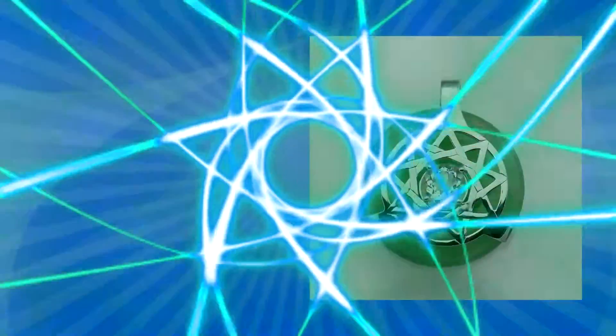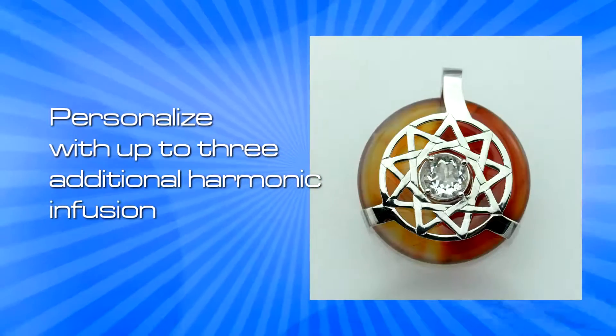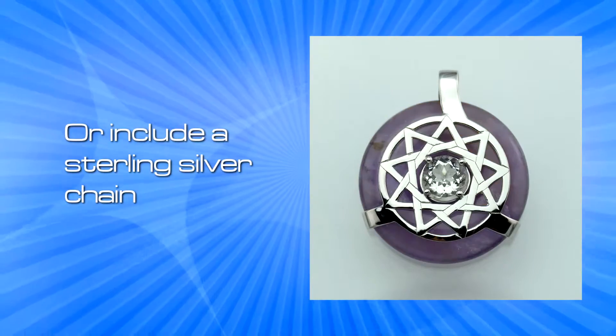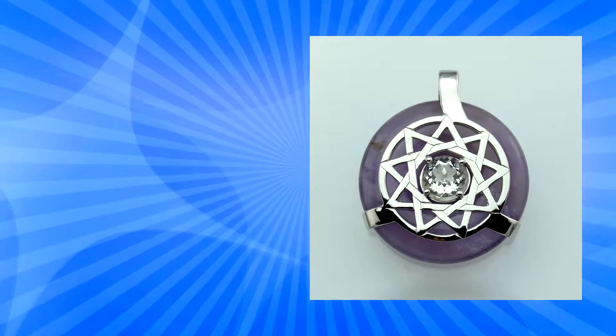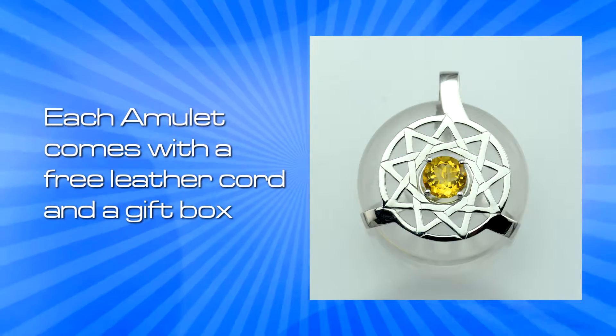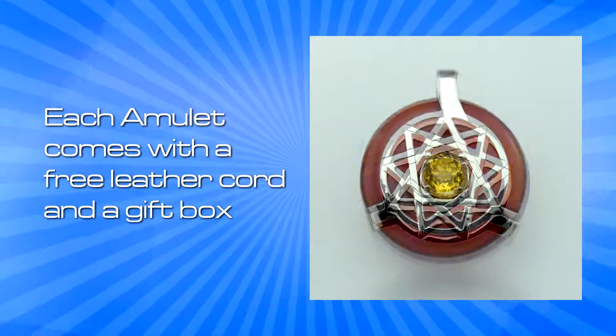You can enhance and personalize your Trinity Star amulet with up to three additional harmonic infusions or opt to include a sterling silver chain. Each Trinity Star amulet comes with a free leather cord and a gift box, so it's ready for wear upon arrival. Just set your intentions and enjoy your tool for transformation.